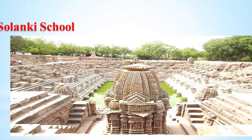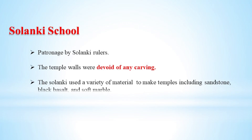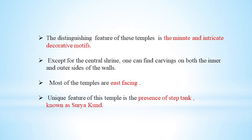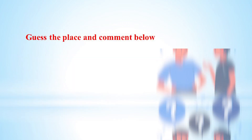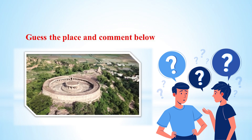The next school is the Solangi school, patronized by the Solangi rulers. Both interior and exterior walls of these temples are devoid of any carving. Another unique feature of the Solangi school is the presence of a step tank, also known as Surya Kund. An example is the Modhera Sun Temple, built under the Solangi school by Bhima I. Viewers are invited to guess the place and write its significance in the comment section.